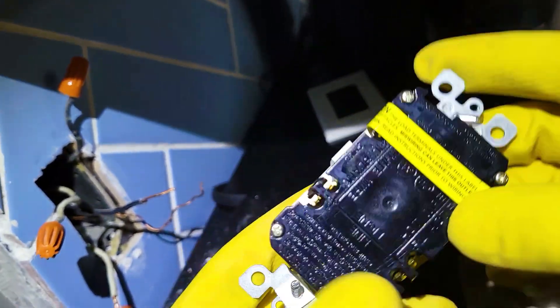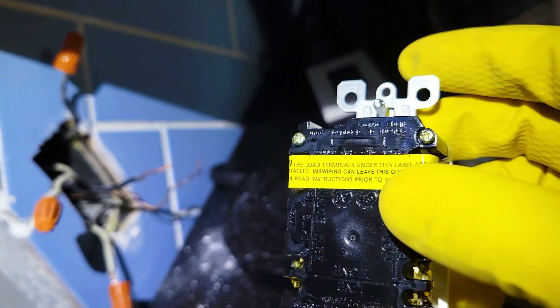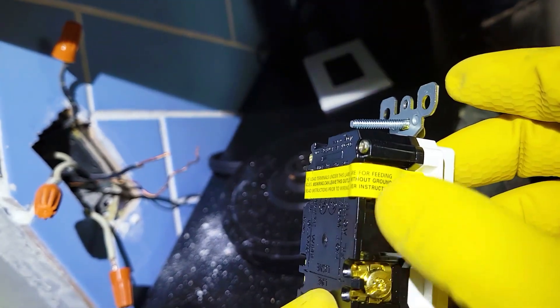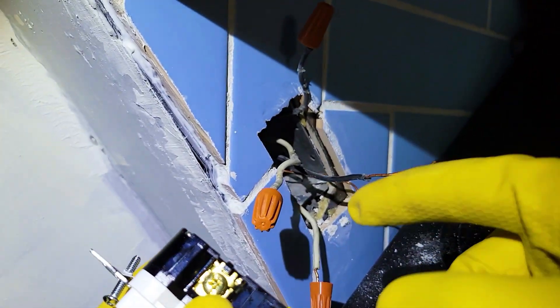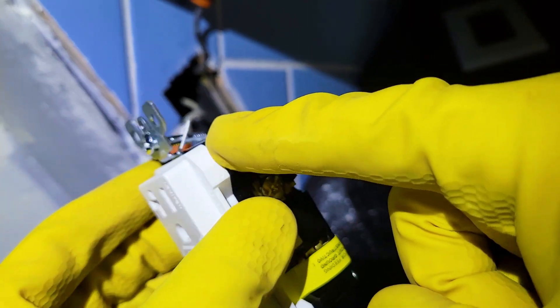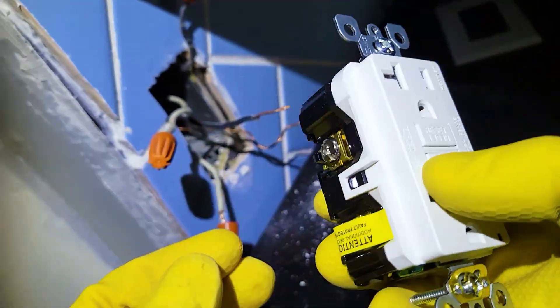There's this little label here that says attention: the load terminals under this label are for feeding additional receptacles. Miswiring can leave this outlet without ground fault protection. This is what we're talking about here—we've got two extras that are taking the power from this one once it's connected and feeding it to the next circuit down the road.